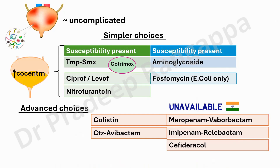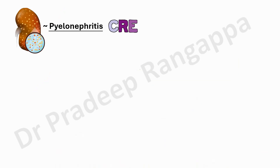That covers uncomplicated UTI. What we tend to see more commonly in the ICU is complicated UTI — hydronephrosis with urosepsis and pyelonephritis. For all these choices there is no robust trial data. Importantly, polymyxin B should not be used for uncomplicated UTI because polymyxin B does not attain urine concentrations — it is excreted by non-renal excretion — so it is not suggested.